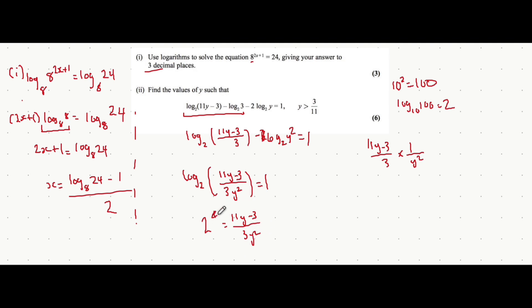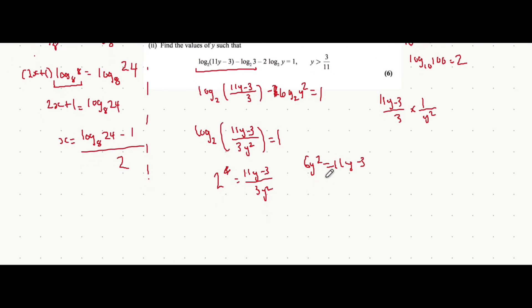2 to the power of 1 is just 2, so I'm just going to write this as 2. Now we just rearrange, so multiply both sides by 3y squared. So you get 6y squared equals 11y minus 3. Take all the terms to one side and solve it like a quadratic. So let's do that.